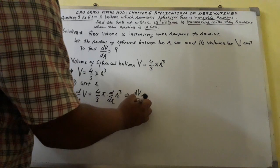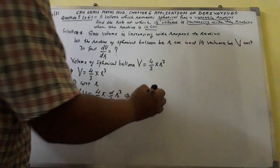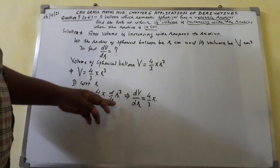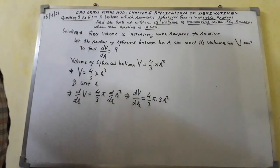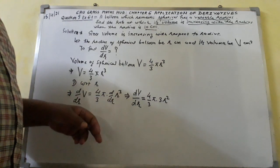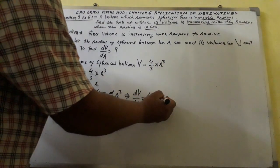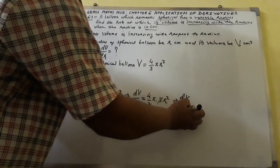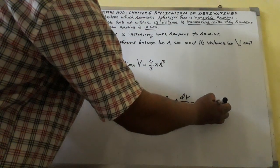So dV/dr is equal to 4/3 π times d/dr of r³, which comes out to be 3r². The 3 will be cancelled out and we will get dV/dr equal to 4π r².